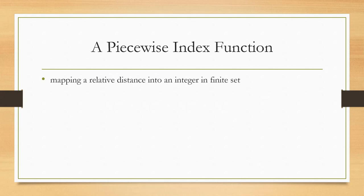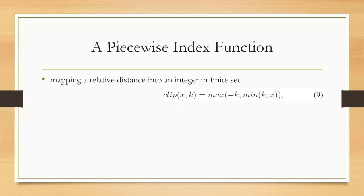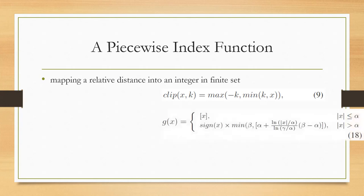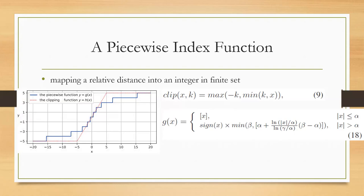Now let's discuss the piecewise index function. The idea is to map a relative distance to an integer in a finite set. Previously the clipping method clips input to only the range of minus k to k, not considering long-range positions. This paper argues that long-range positional information should be preserved, especially for high-resolution image processing. The authors use a g(x) function that distributes different levels of attention by relative distance.